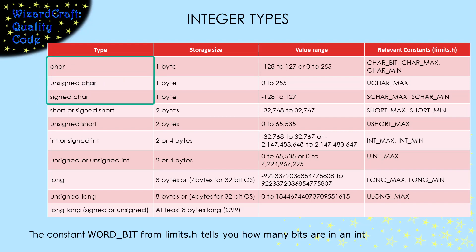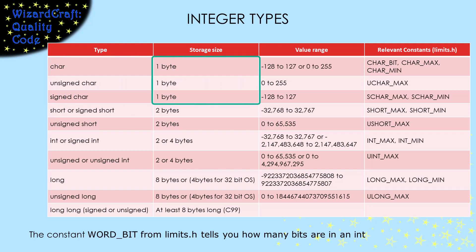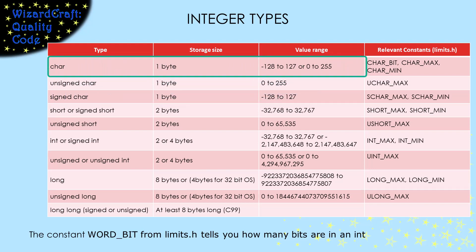The smallest types of integers are based on the char type, which holds characters too. We'll talk about that in a couple of slides. For now, that is a type that can hold only a one-byte integer. If you don't specify whether it's signed or not, what you get depends on the compiler you use. Some will default to signed and some to unsigned.